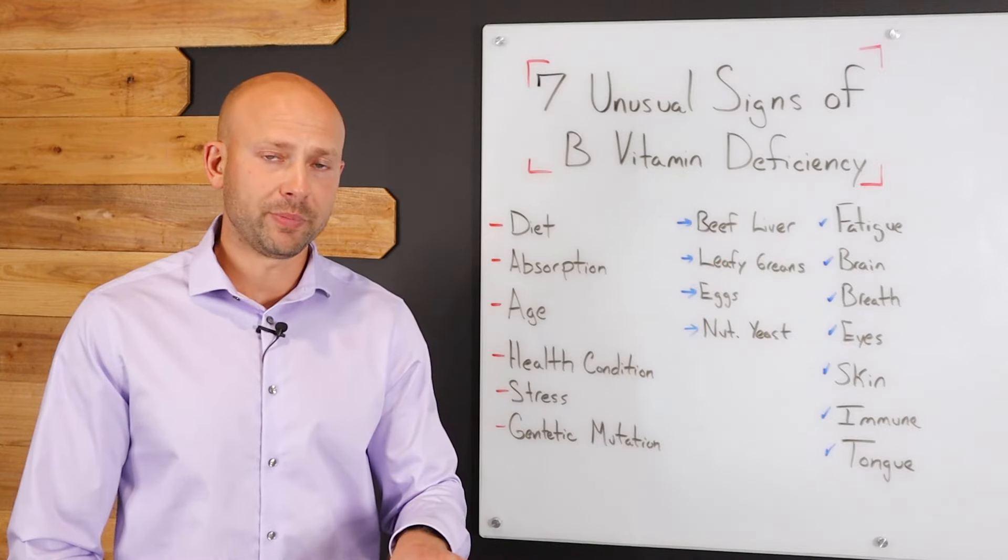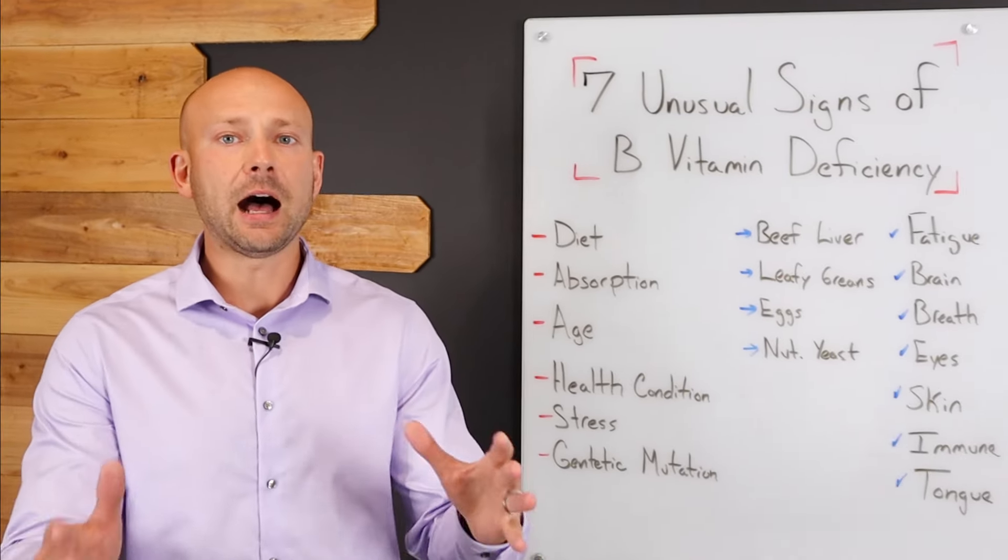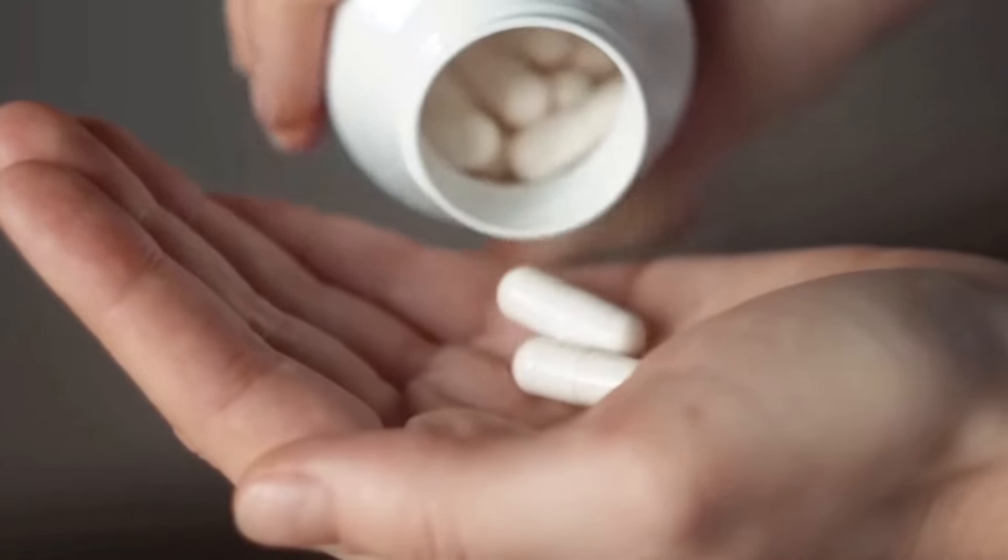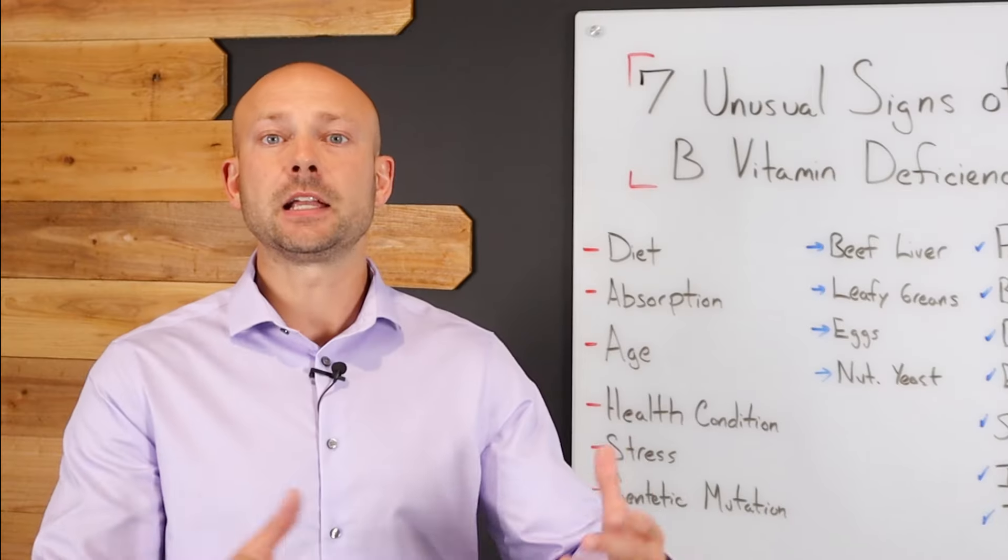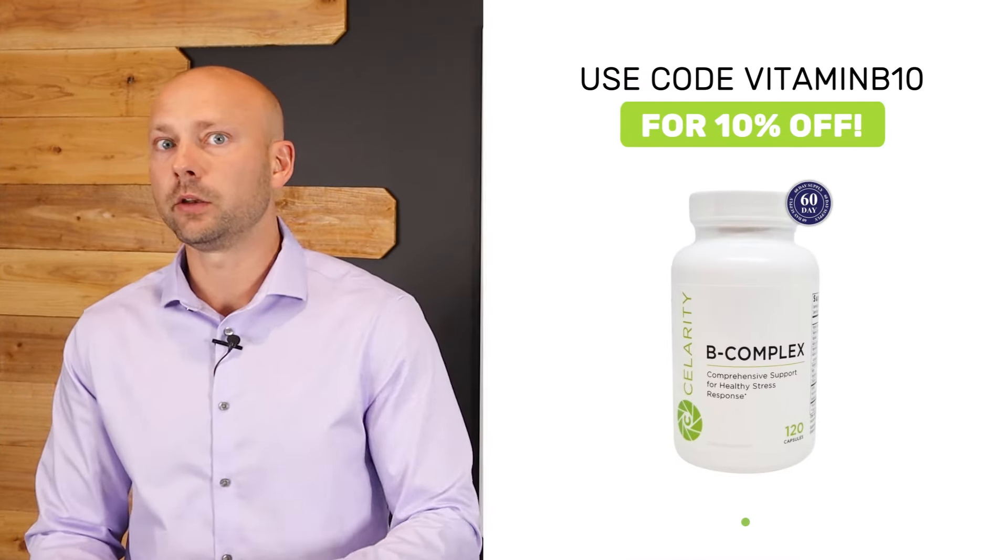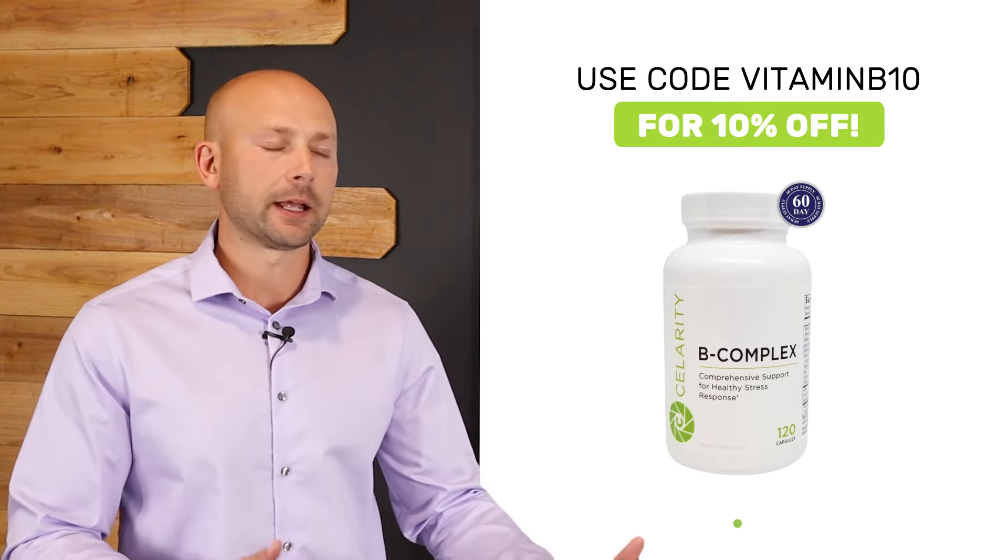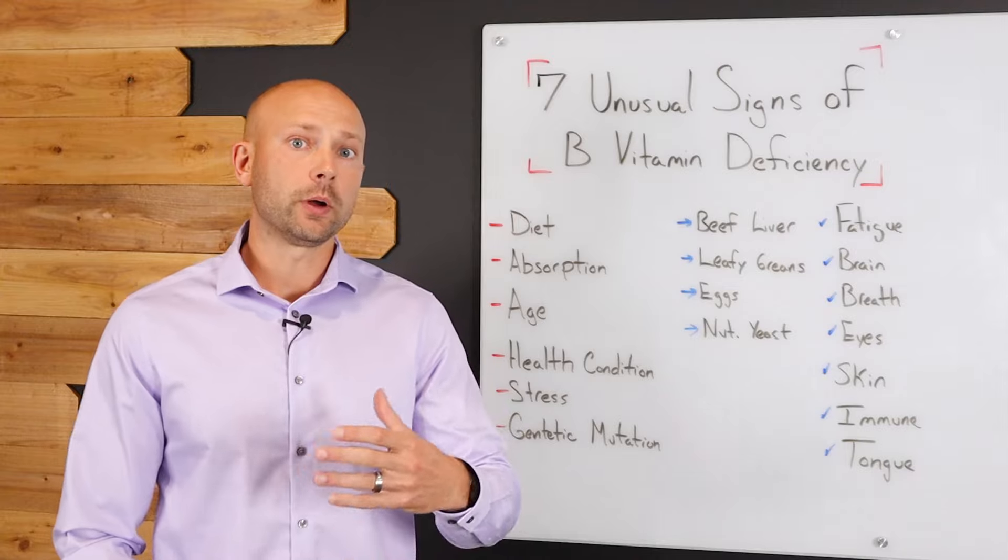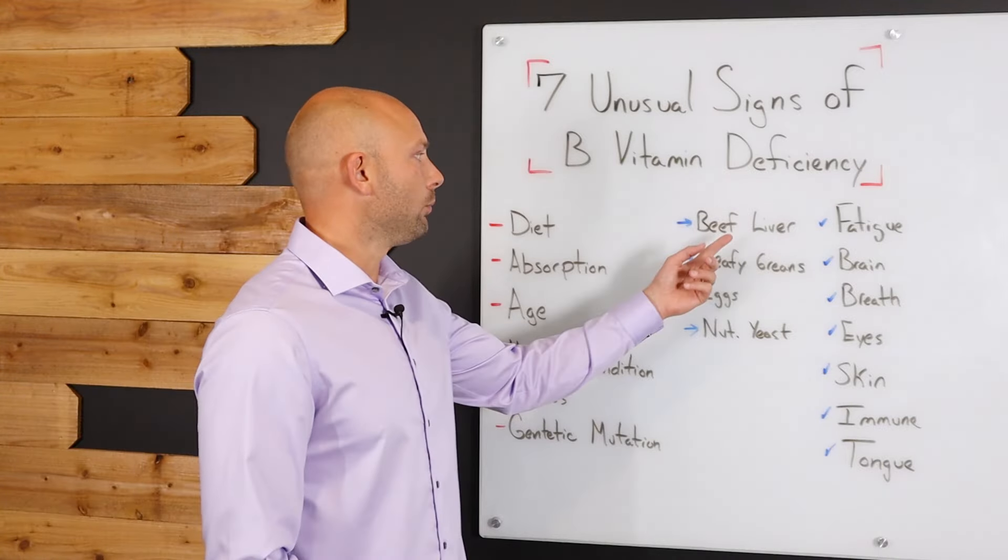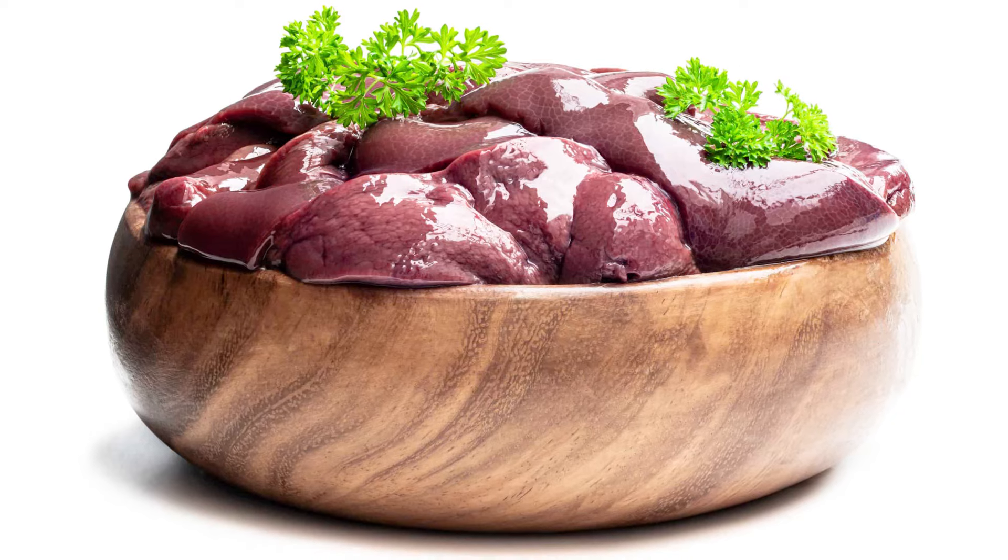Now, as we talk about how to get more B vitamins in your life, obviously you could take a B vitamin supplement, a B complex. And I'll put a link to one in the description below so that you have access to a good quality one, one that I use in my clinic. But the other way that you could go and increase your B vitamins is by eating more beef liver or organ meats. They're loaded with B vitamins. Very good for that.